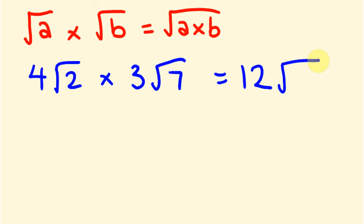And we'll put the square root there, 2 times 7 is 14. That's how to multiply surds.